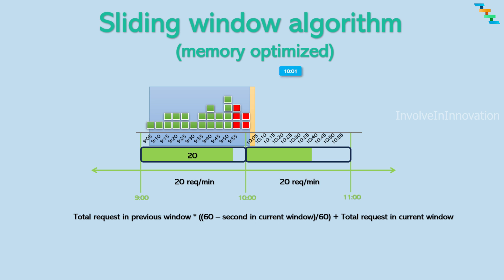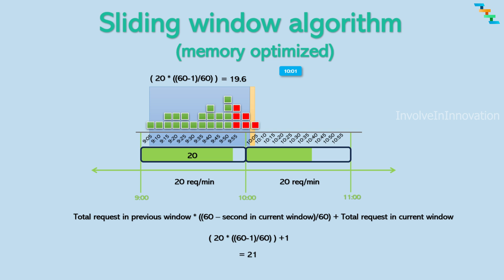A request comes in at 10 minutes and 1 second. We need to find the approximate number of requests that arrived in the last 59 seconds of the last fixed window. To calculate the approximate count, use the formula: total successful requests in the last fixed window period (20) multiplied by (60 minus current window second 1) divided by 60, which is approximately equal to 19.6, rounded up to 20.